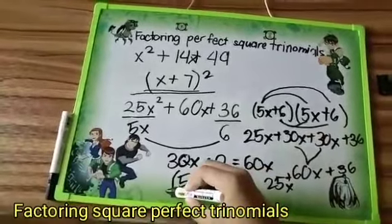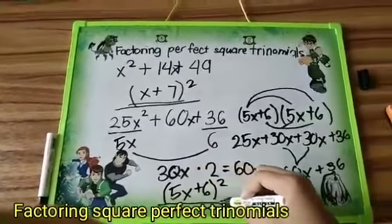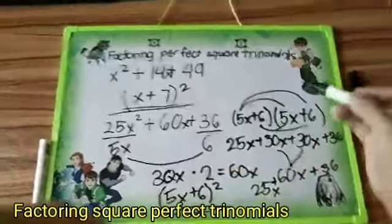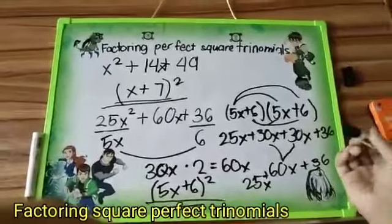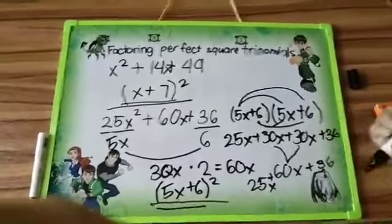So you know that the real answer is 5x plus 6, the quantity squared. So that's how you factor perfect square trinomials.